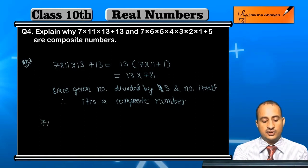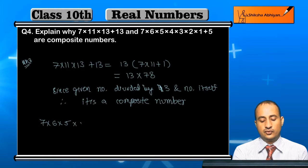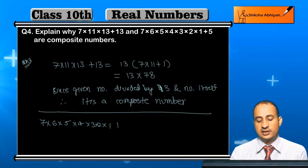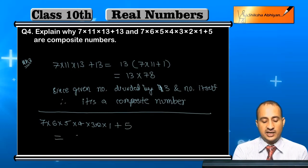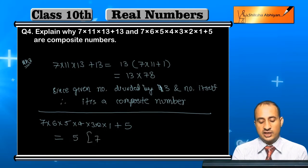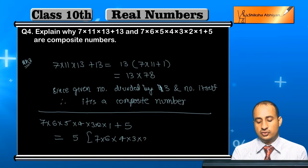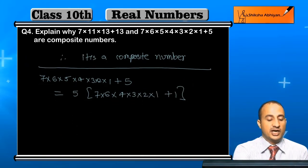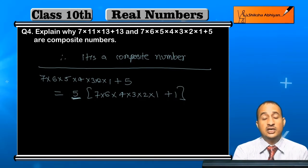Now the second number is: 7 into 6 into 5 into 4 into 3 into 2 into 1 plus 5. If you take 5 as common here, then what will you get? 5 into (7 into 6 into 4 into 3 into 2 into 1 plus 1). Whatever value comes, it will be divided by 5 and it will be divided by itself.